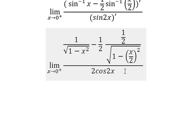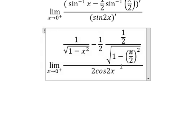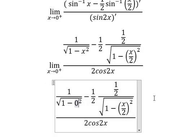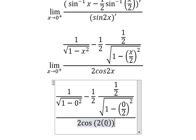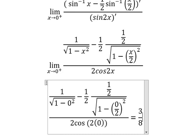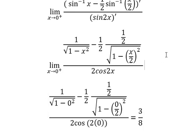After we have this, we put zero in here, zero in here, and zero in here, and we will have the final answer. Now we calculate this one and we have three over eight. This is the end — thank you for watching.